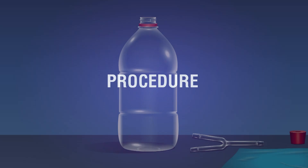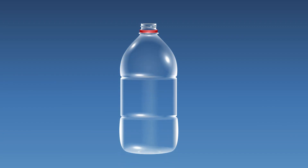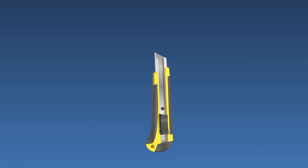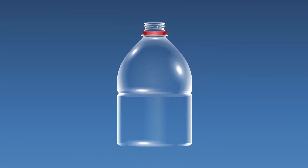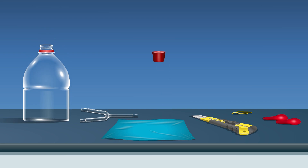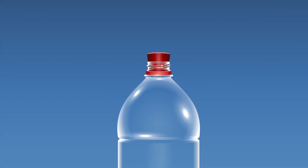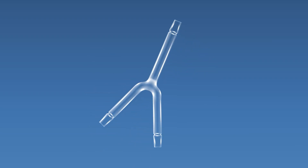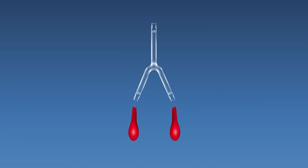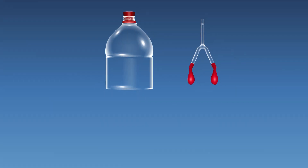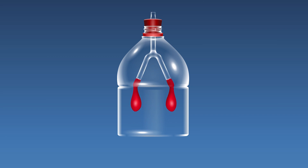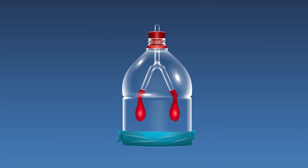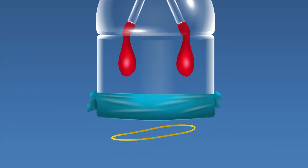Procedure: Take a wide-mouthed plastic bottle and cut the bottom of the bottle with a blade. Take a one-hole cork and tightly close the top of the bottle with the cork. Take a Y-shaped glass tube and insert a balloon on both ends, then insert the Y-shaped glass tube into the cork in an inverted position. Take a rubber sheet and cover the bottom of the bottle and tie the tip with a rubber band.